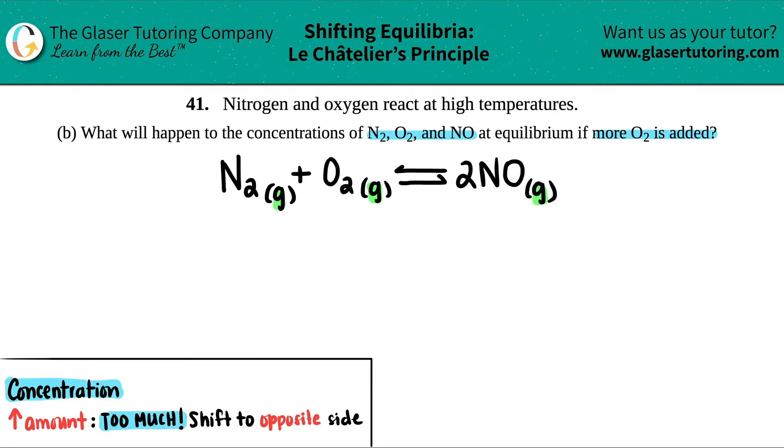So I'm increasing the O2. So now we just have to counteract it. I want to get rid of the O2 and come back to equilibrium. So I will shift to the opposite side. This is a reactant. So you will shift to the products.